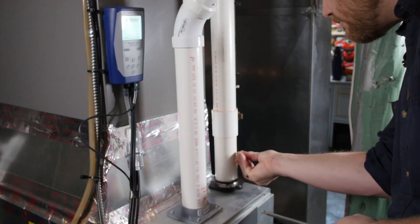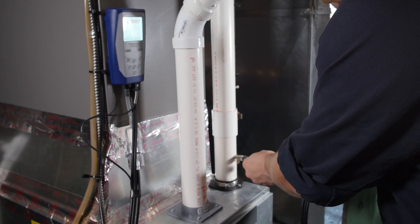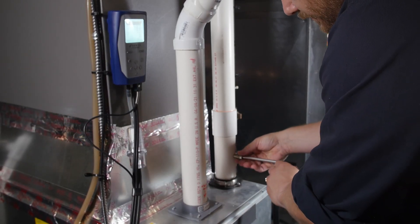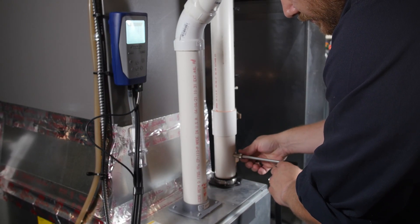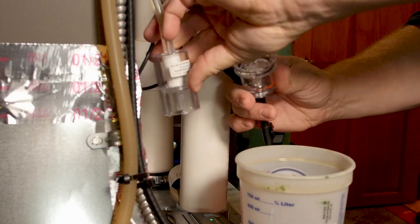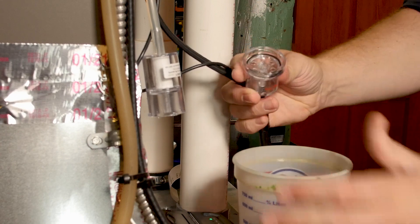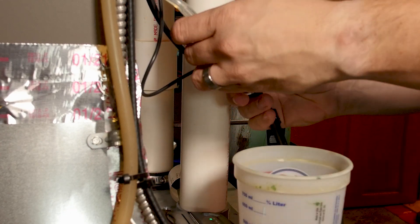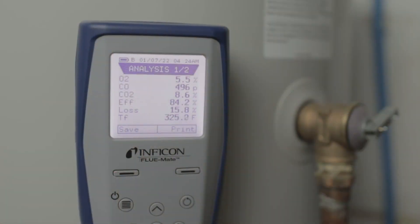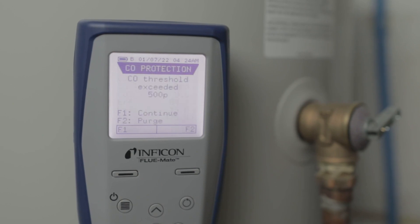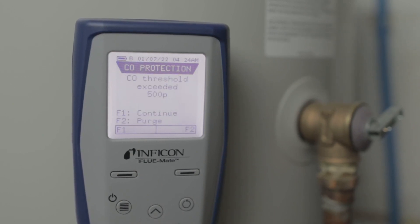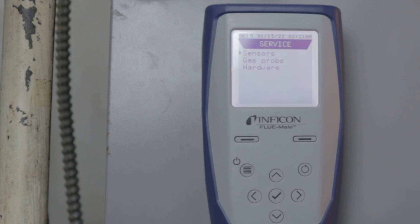Inficon knows how important it is that your tools work when you need them. Flumate is equipped with a few features that help protect it and prolong its usable life. An easy-to-see external water trap protects the sensor and internal electronics from water damage and particulates, while an automatic pump shutoff feature prevents excessive carbon monoxide concentrations from damaging the sensor. A self-diagnosis feature ensures that Flumate is always working properly.